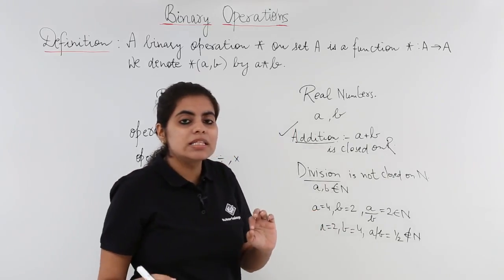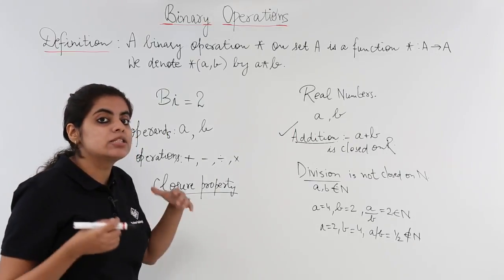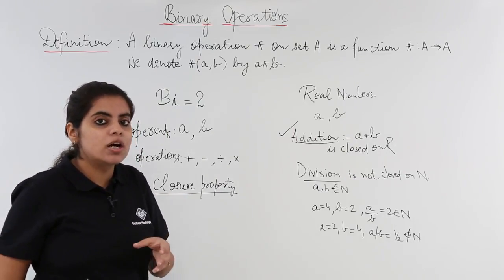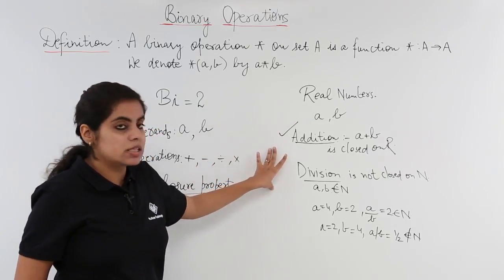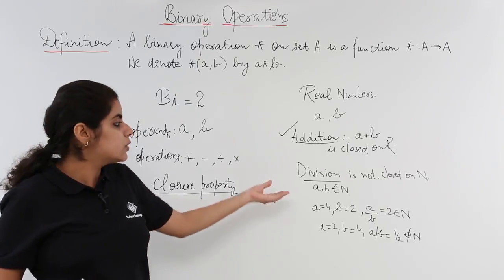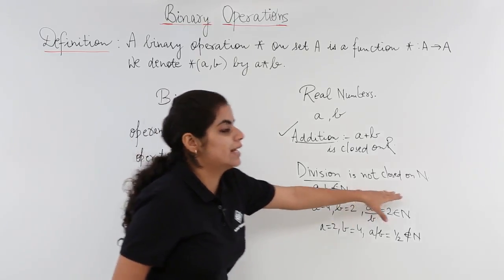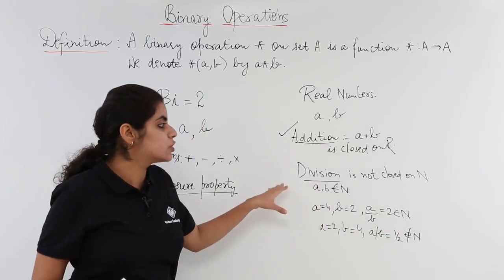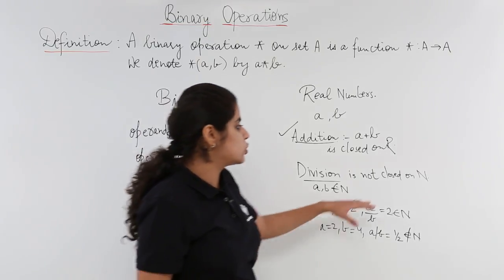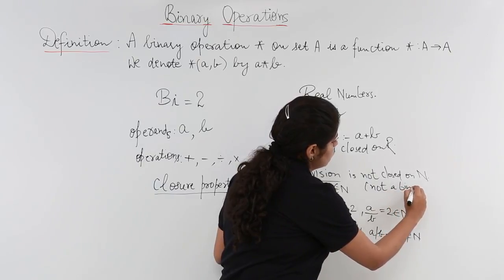How is closure property related to binary operations? The closure property is significant to the study of binary operations because it tells me whether a binary operation exists or not. I would say division is not a binary operation on natural numbers. A thing which is not closed signifies it is not a binary operation.